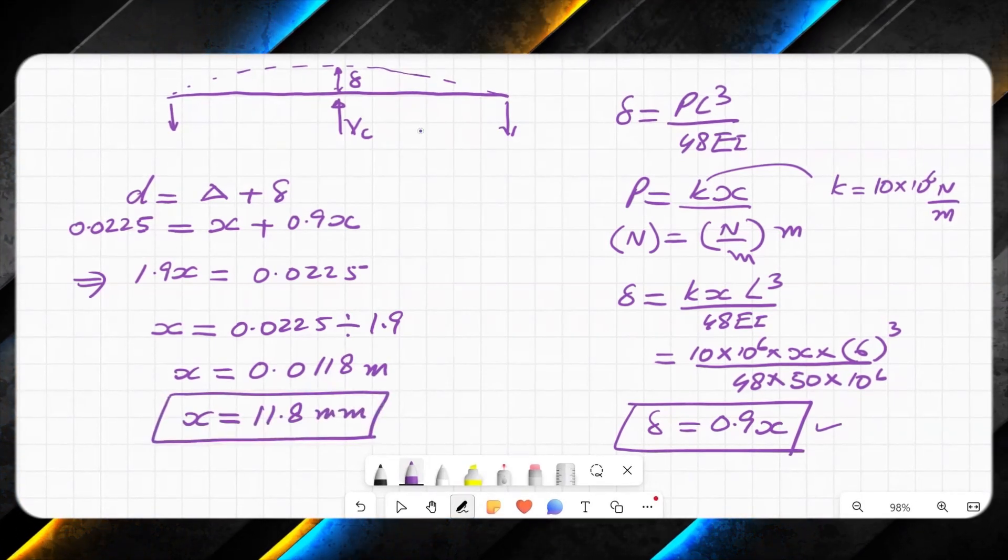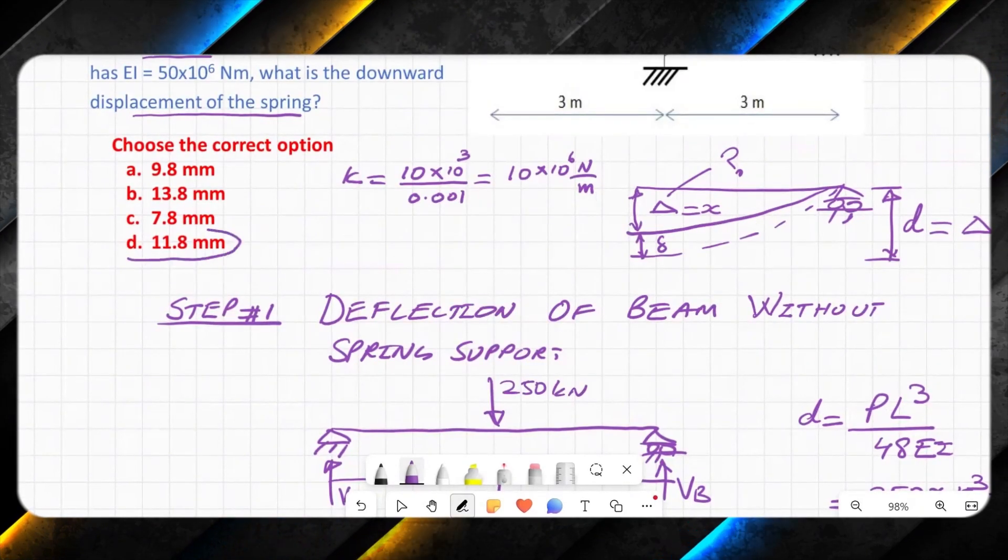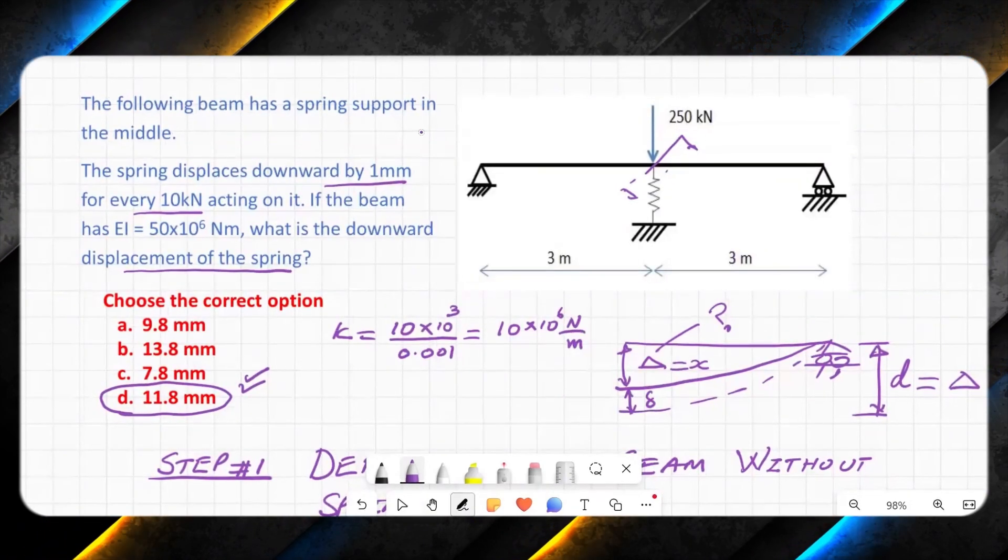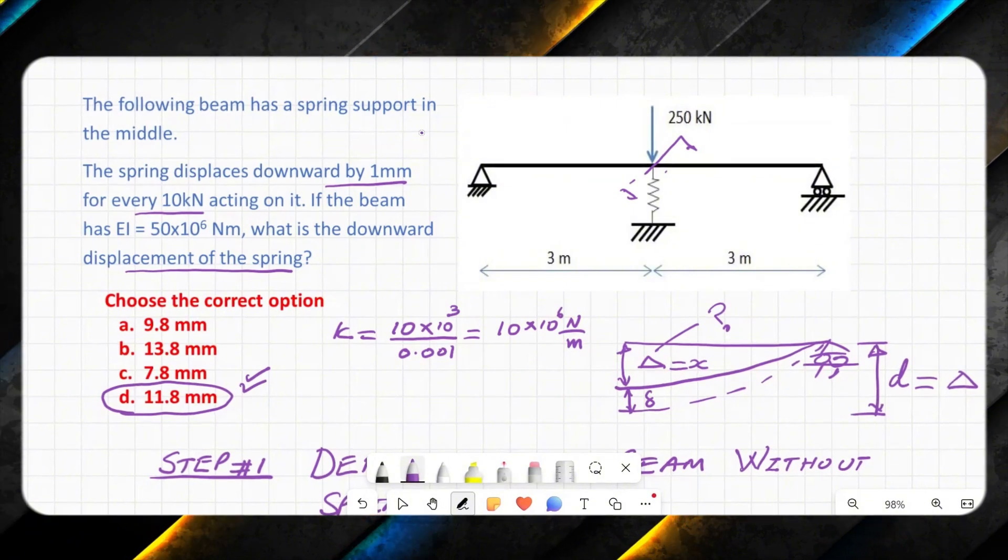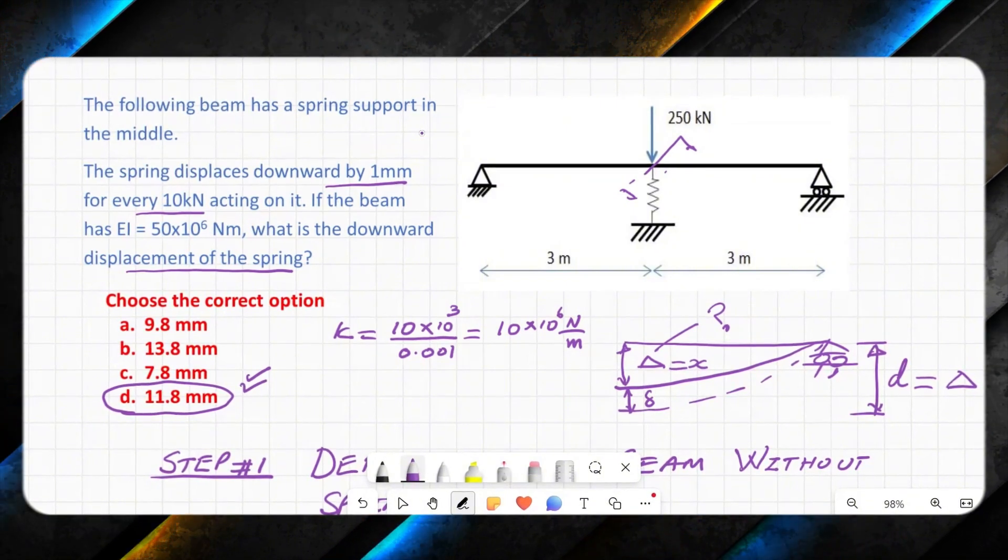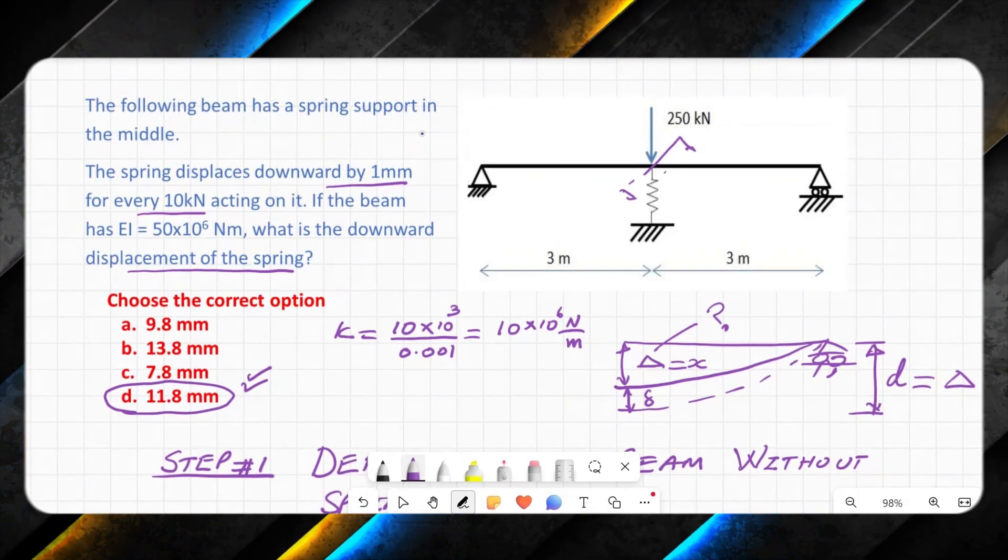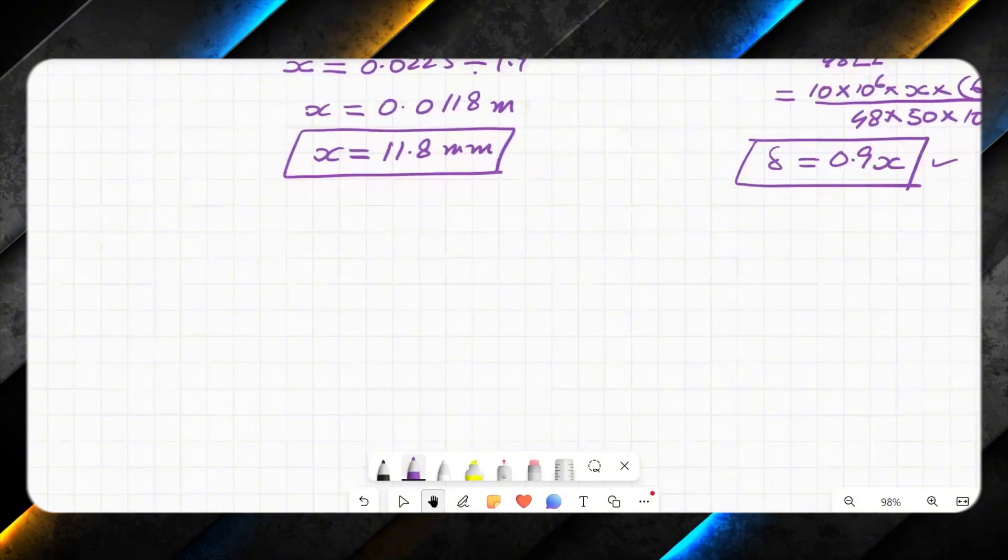This is our required deflection. From these options, option D is the correct option. Alternatively, I can find the stiffness of beam, I can find the stiffness of spring. Then, because these are two springs, they are acting in parallel because their displacement is same but the forces are different.